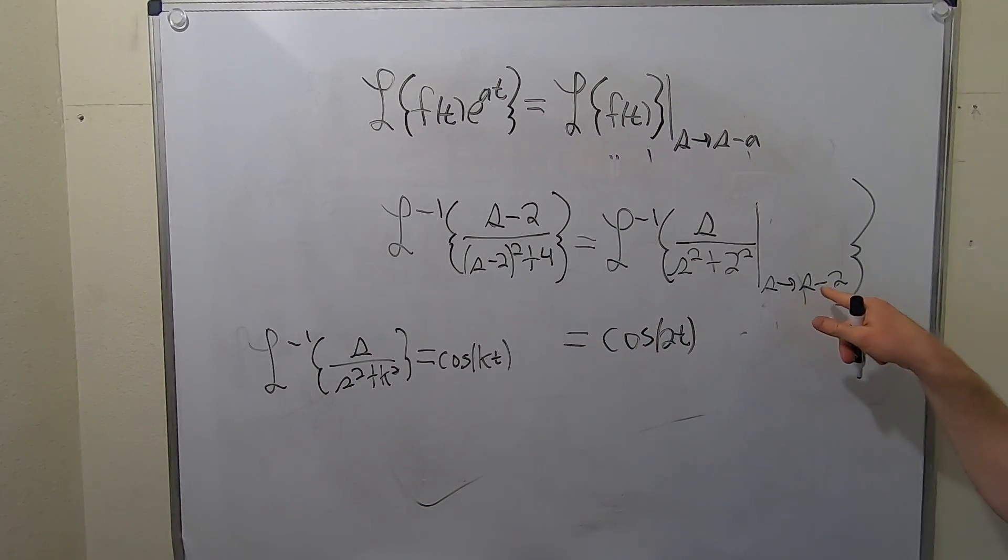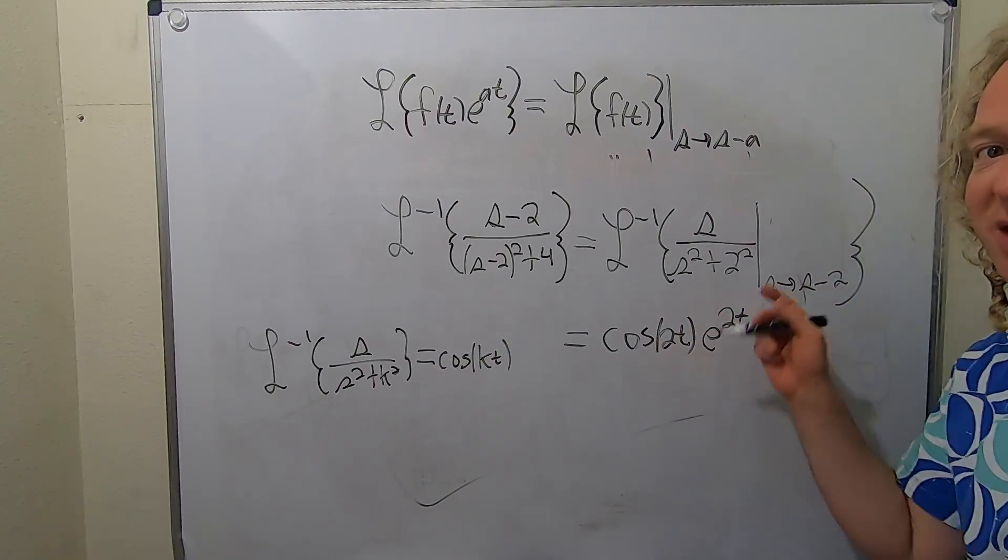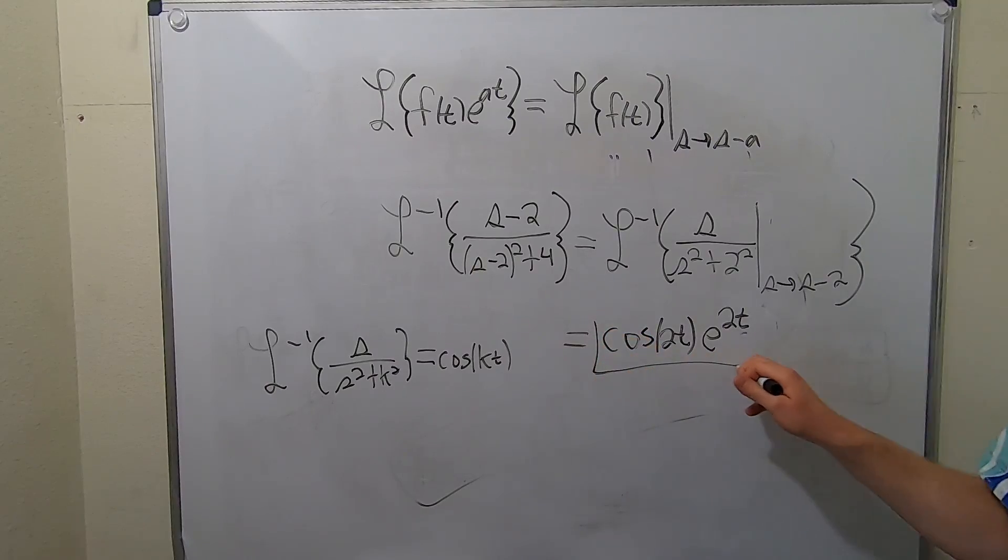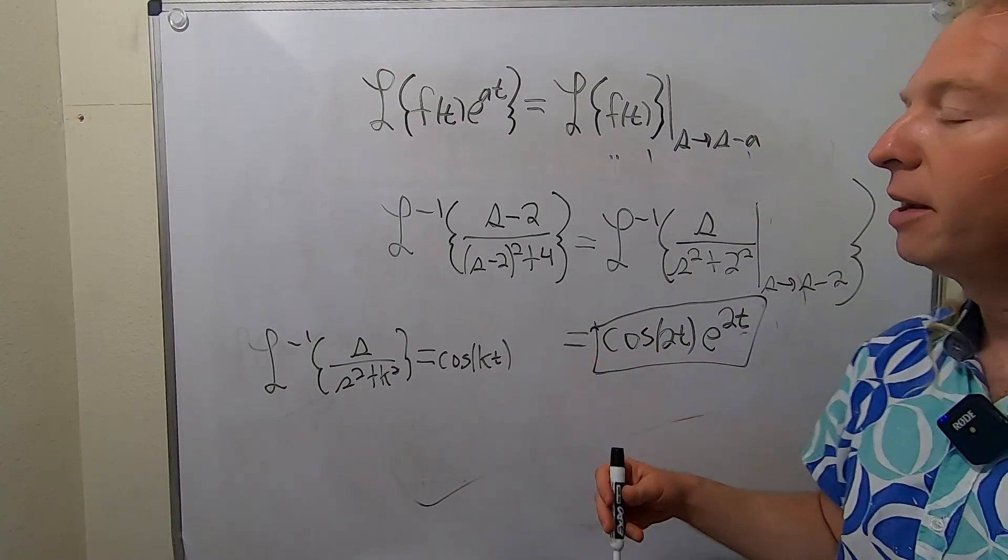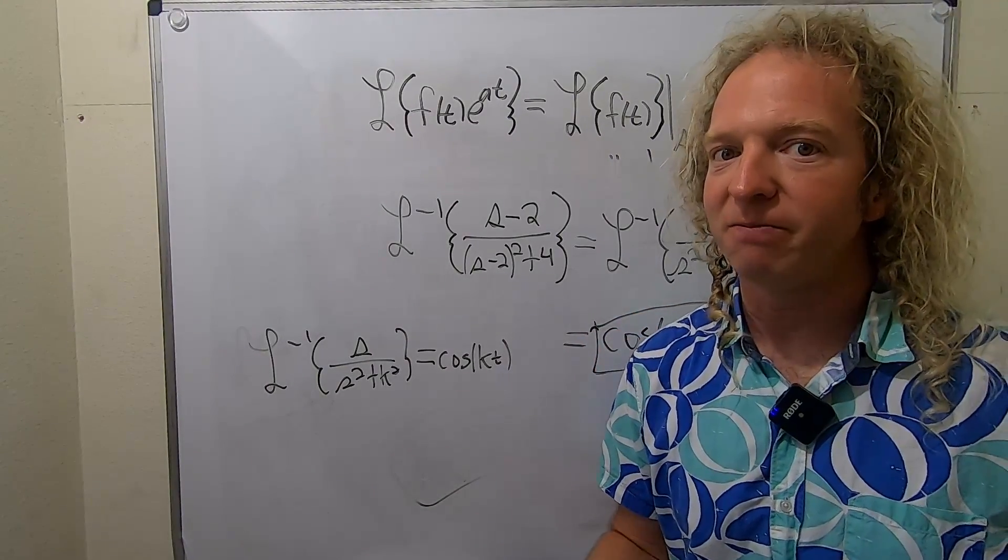And this is going to give us an e to the 2t because it's s minus a. So it's e to the 2t. If it was s plus 2, it would be e to the negative 2t. And that would be the final answer. I hope this video has been helpful to anyone out there who is trying to learn about the first translation theorem. Take care.